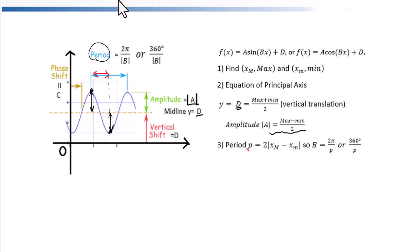So we get period equals double the horizontal distance between maximum and minimum points. Using the formula P equals 360 degrees over B, we can figure out B equals 360 degrees over period.